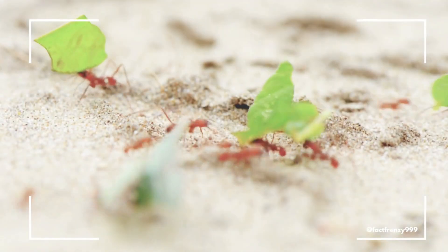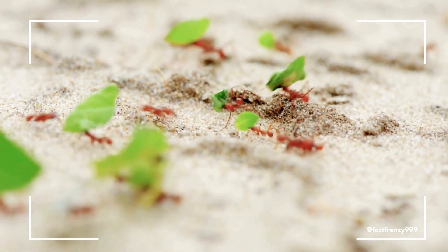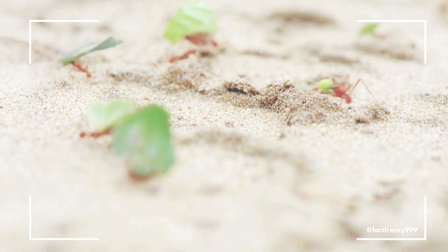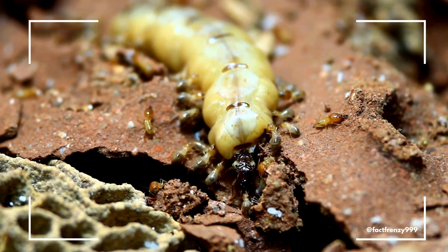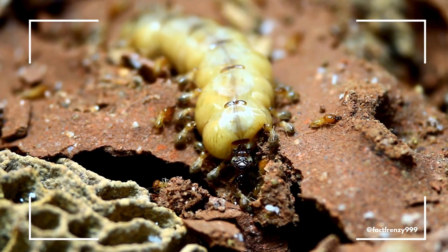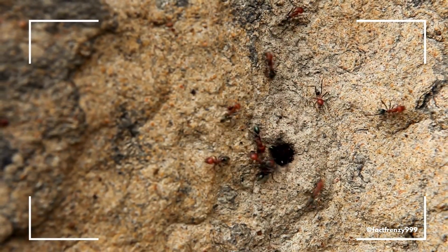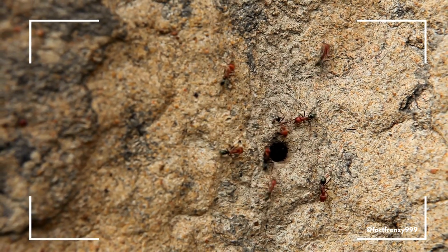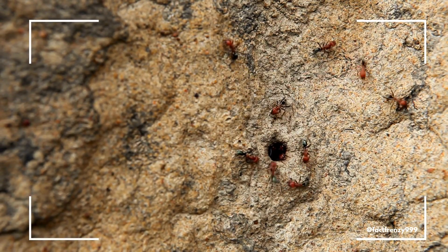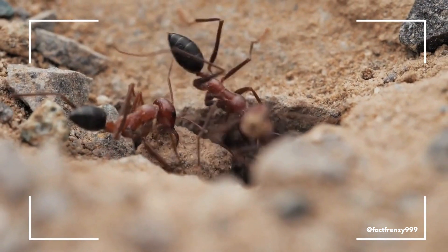Before we wrap up, here are some fun facts. Did you know that some ant species can carry up to 50 times their body weight? Meanwhile, termite queens can live up to 50 years, making them some of the longest-living insects on Earth. Another cool fact: termites and ants often clash in nature. Ants are natural predators of termites and will raid their nests for food — it's like an insect version of a turf war.